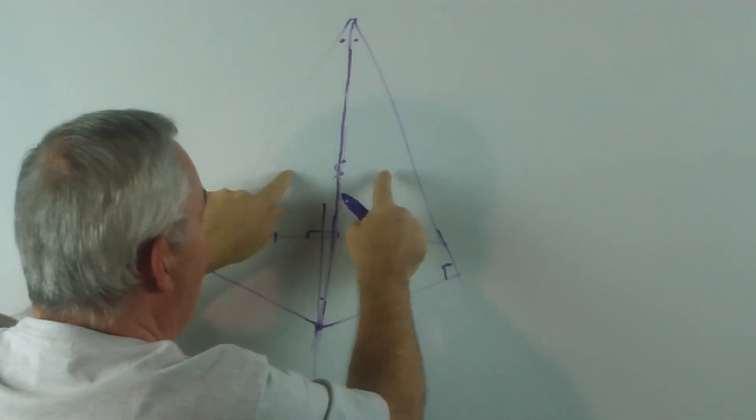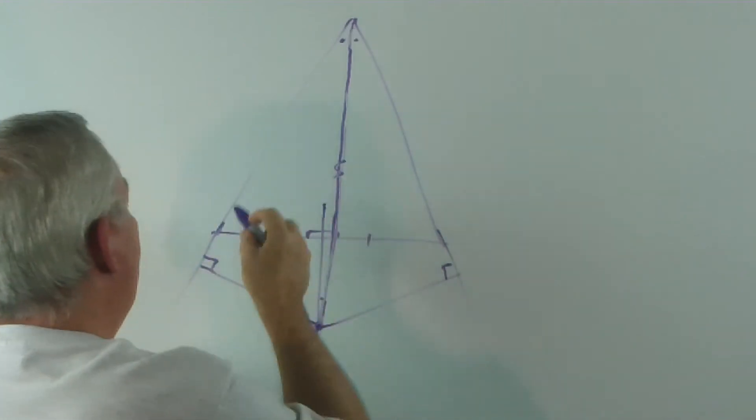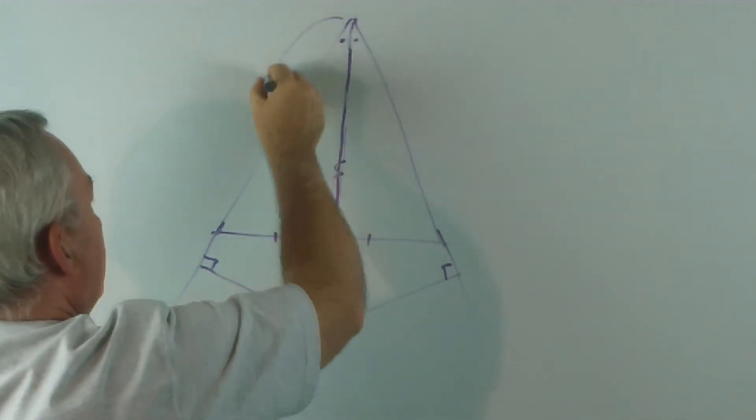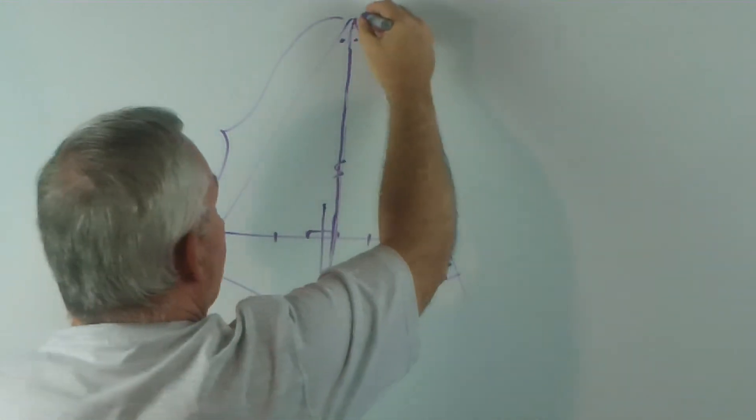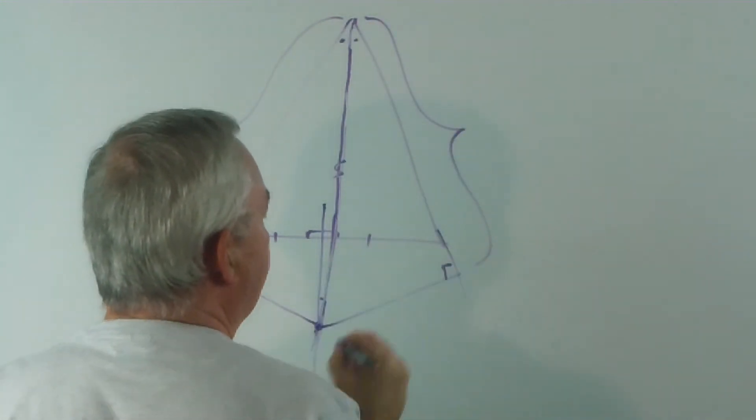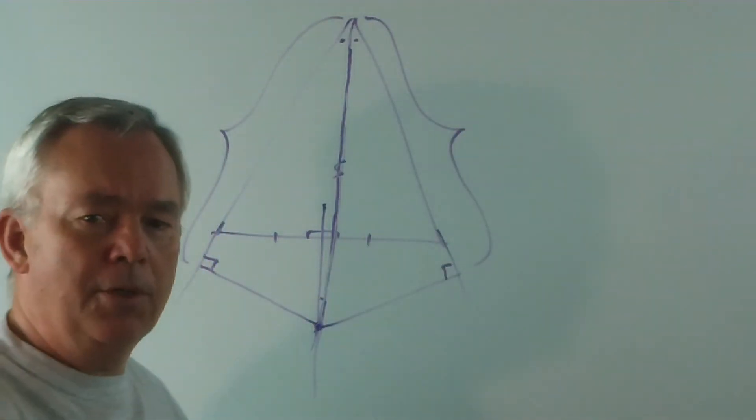angle, side, both these triangles are congruent. Therefore the length here is equal to the length here. I think you'll agree with that.